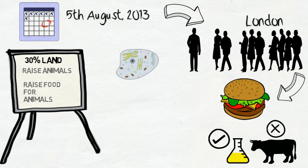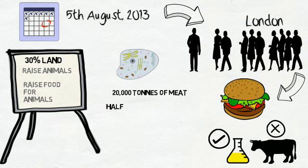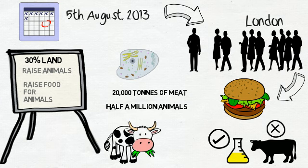In the lab, however, a single stem cell from one such animal could generate 20,000 tons of meat. This quantity of meat would generally come from half a million animals.